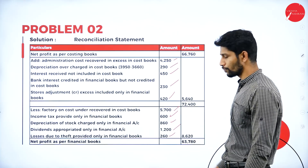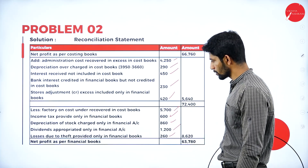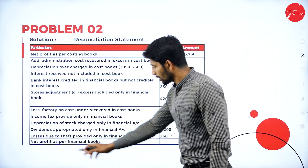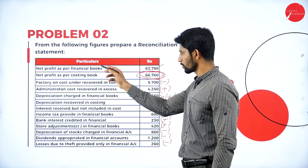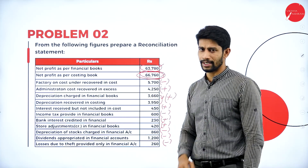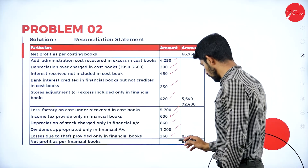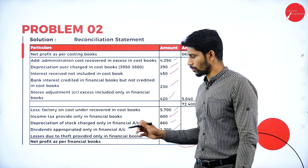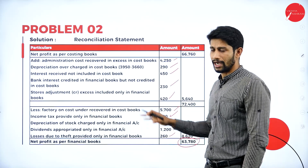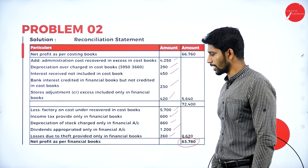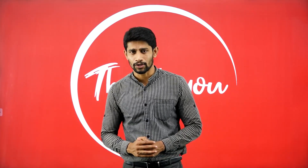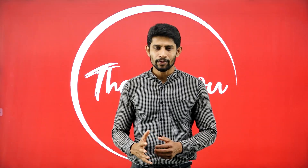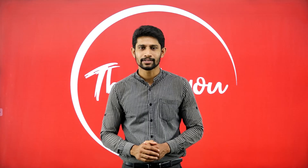Deducting Rs. 8,620 from Rs. 72,400 gives a balance of Rs. 63,780 — the net profit as per financial books. Cross-verifying with the question, the net profit as per financial books is Rs. 63,780, which matches. Because of these adjustments, the costing books and financial books show a difference in profit. This is how you solve problems with respect to reconciliation of cost and financial accounts. I will come up with few more videos. Until then, thank you all. Have a nice day. Namaste.